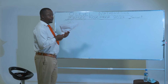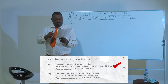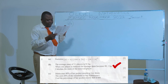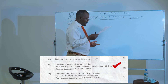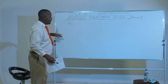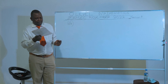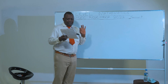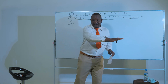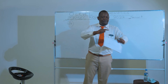Here is question 2B. The average mass of 11 players is 81 kilograms. When one player is removed, the average mass becomes 80.1 kilograms. Calculate the mass of the removed player.